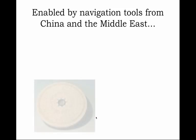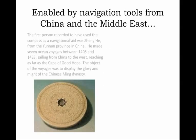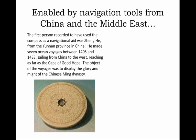Enabled by navigation tools from China and the Middle East, like the magnetic compass — a Chinese invention — the first person recorded to have used the compass as a navigational aid was the legendary seafarer Zheng He, who came from the Yunnan province of southern China. He made seven voyages between 1405 and 1433. Notice these dates — this is 60 years before Columbus. Zheng He had led the famous Chinese treasure fleets as far as the Cape of Good Hope at the southern tip of Africa. The object of the voyages was to display the glory and might of the Chinese Ming Dynasty, but they also proved that long-distance ocean navigation was not only possible but potentially quite profitable.